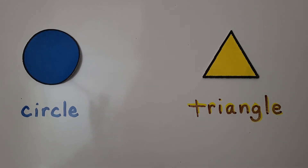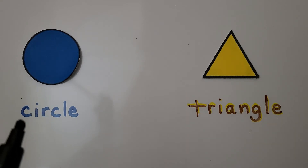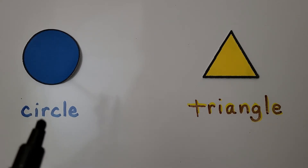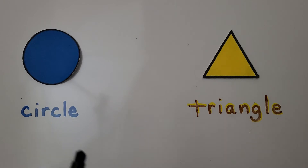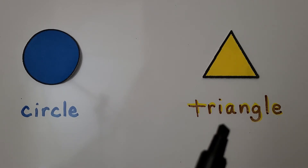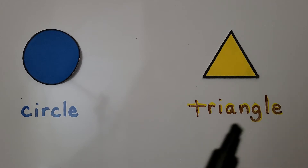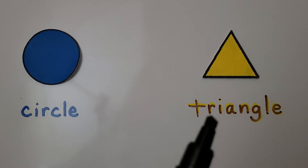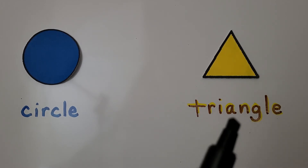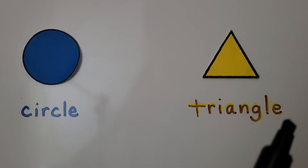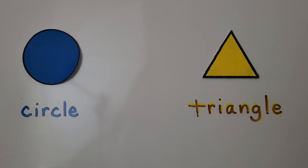This is a circle — C-I-R-C-L-E. This is a triangle. The triangle has three sides. T-R-I-A-N-G-L-E. Triangle.